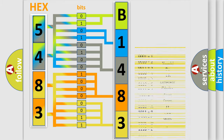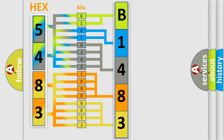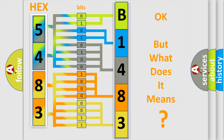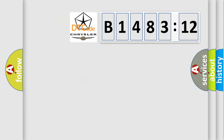So, what does the diagnostic trouble code B148312 interpret specifically? For Chrysler car manufacturers, the basic definition is: evap system flow during non-purge.